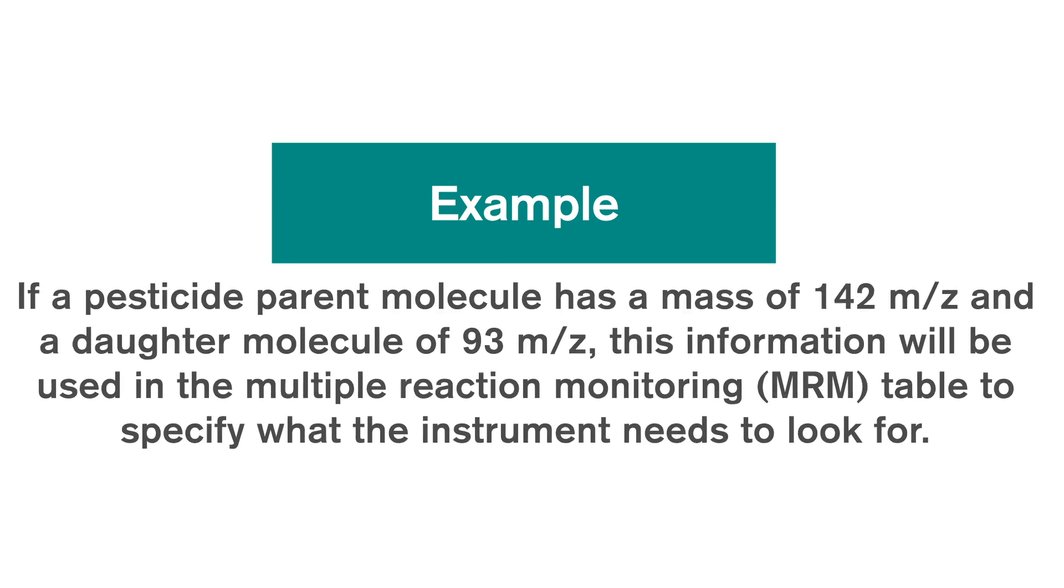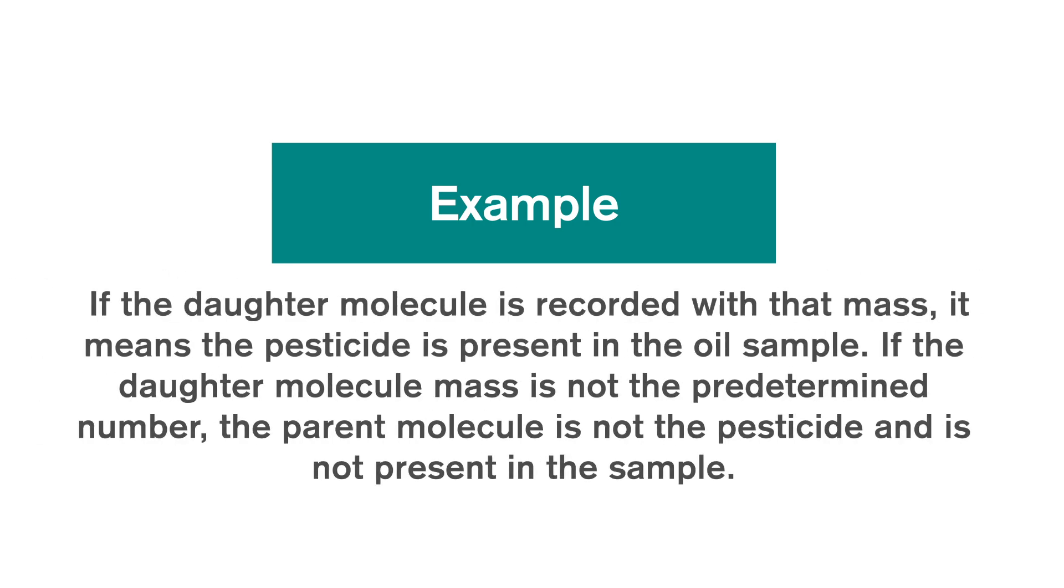If the daughter molecule is recorded with that mass, it means the pesticide is present in the oil sample. If the daughter molecule mass is not the predetermined number, the parent molecule is not the pesticide and is not present in the sample.